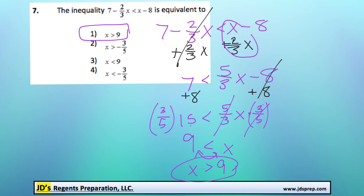Also, just a heads up, there is another way of solving this inequality. To get rid of that fraction, another thing you could do is multiply every single term by 3, and then it would become 21 minus 2x is less than 3x minus 24.